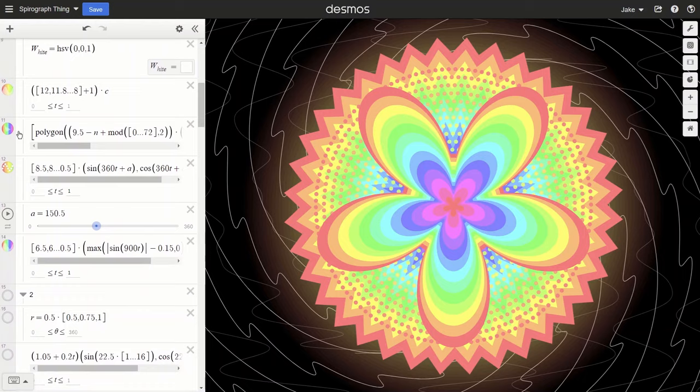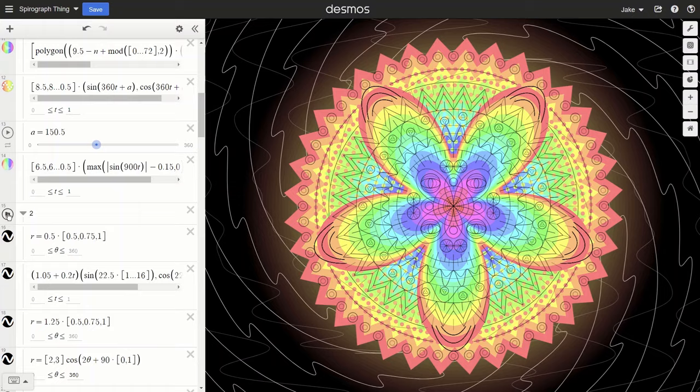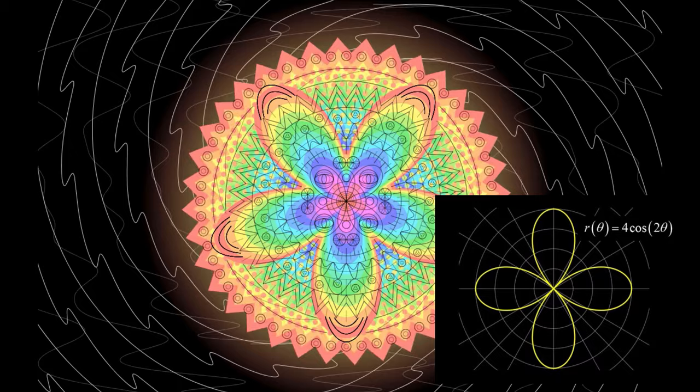Then, once I had something I liked, I made the rainbow flower design and added the white wavy lines in the background. A majority of the designs and curves are made with trig functions, with the flower design being made out of rose curves.